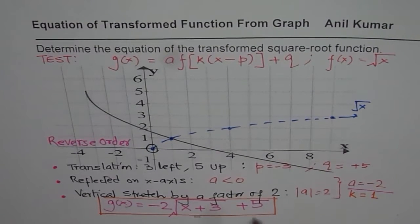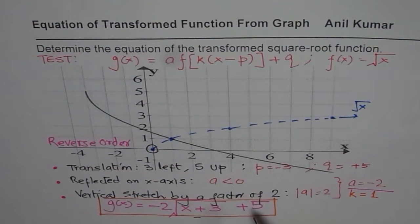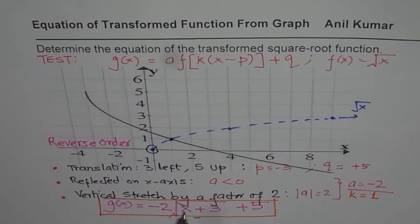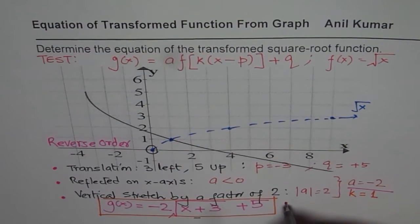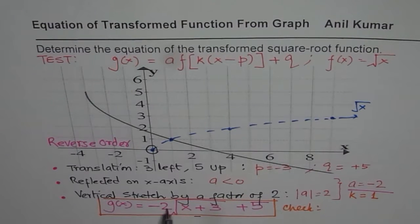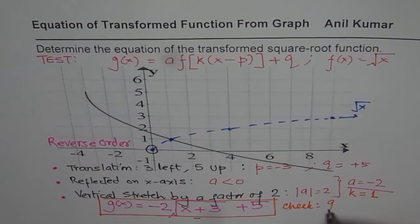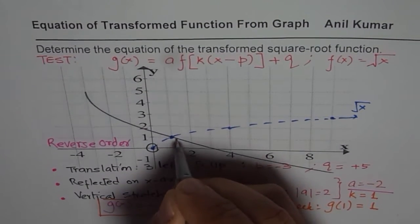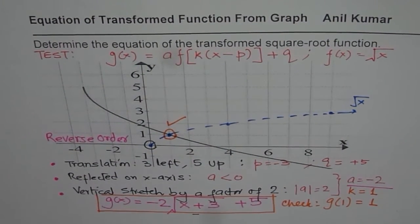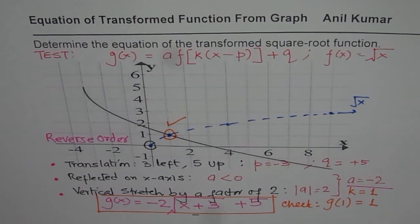After writing the answer, you can check with a couple of points. For example, at x = 1 we expect g(1) = 1. Plugging in: 1 + 3 = 4, √4 = 2, −2 × 2 = −4, then −4 + 5 = 1. So g(1) = 1, which is correct. That is how you solve such questions involving transformations. I hope this video works well for you — thank you and all the best.